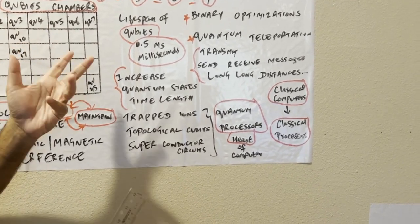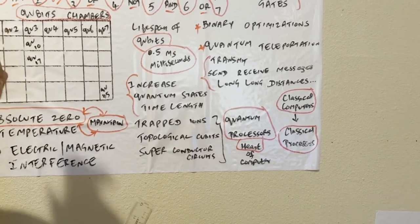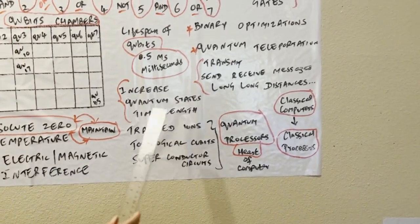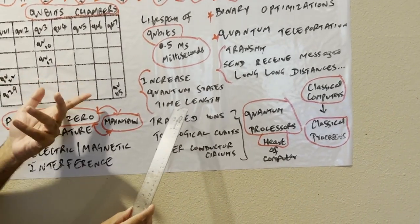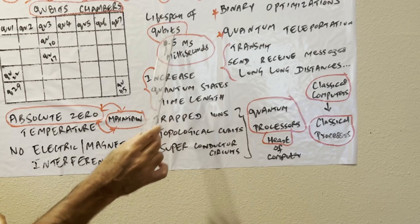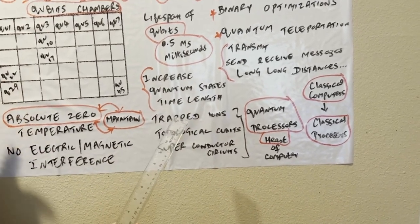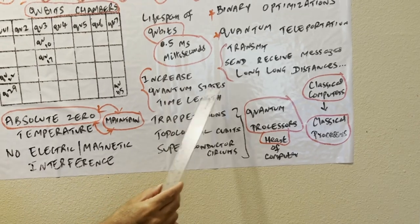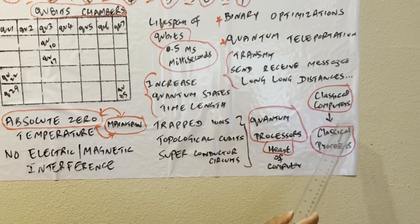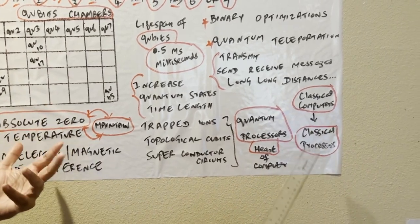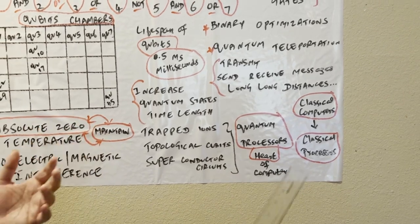Where our technology is advancing, you know, with a very powerful quantum computer, it might happen in five years or ten years. I talked about the future plan for quantum computers. See, this is only 0.5 milliseconds. They're trying to increase the time so we can make use of it more, increase the quantum states time length, the 0.5 milliseconds I'm talking about.